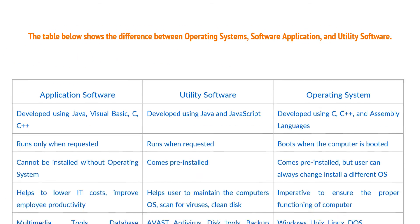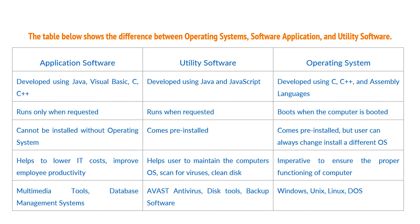Here is a comparison of the differences between operating systems, application software and utility software. Application software is developed using Java, Visual Basic, C and C++. Utility software is also developed using Java and JavaScript. The operating system is developed using C, C++ and assembly languages.